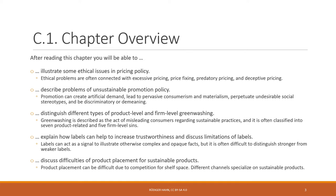You'll be able to distinguish different types of product-level and firm-level greenwashing. Greenwashing is described as misleading consumers regarding sustainable practices — companies want consumers to perceive themselves, the company as a whole, or their products as greener than they actually are. This misleading practice is called greenwashing, and we have different types: seven product-related types and five firm-level types, so-called SINs of greenwashing, which we'll discuss in this chapter.